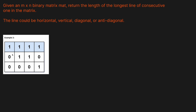Looking at a basic example, let's look at all of the possible lines of ones we have. We have this line of ones, this line of ones, this one, this one, and then this one. We see that the longest one is obviously going to be four.